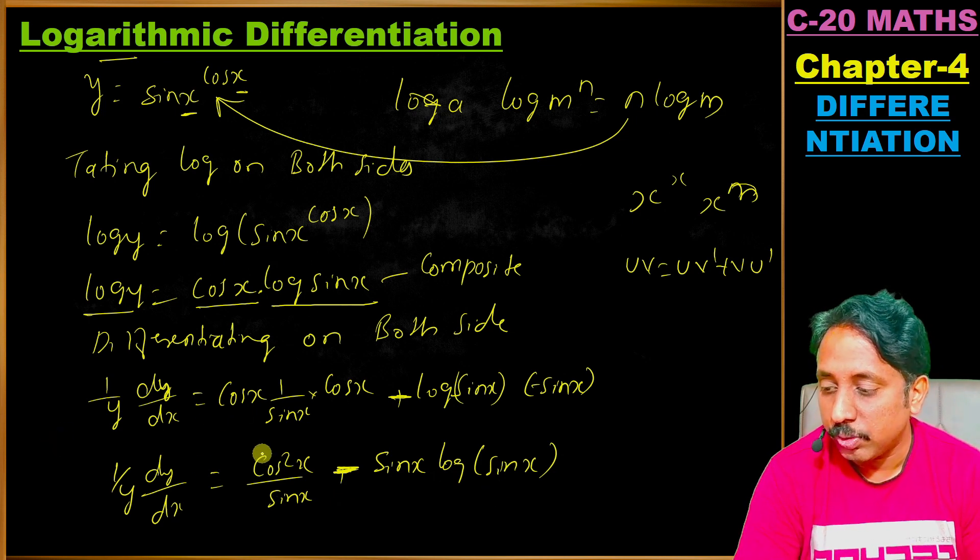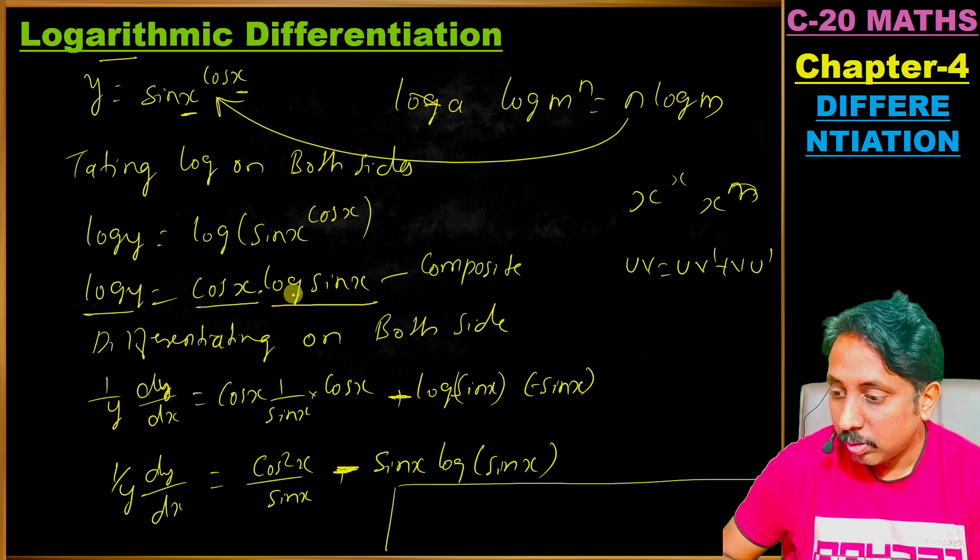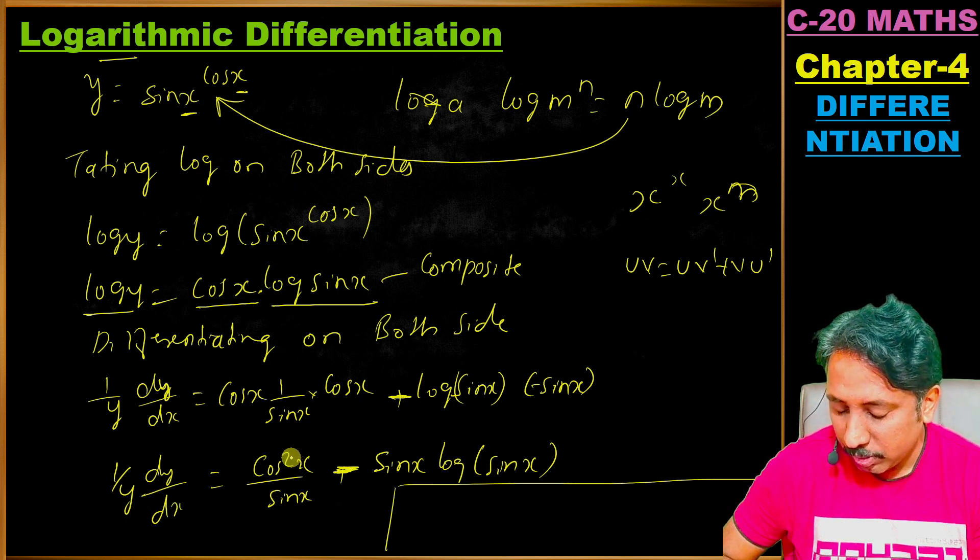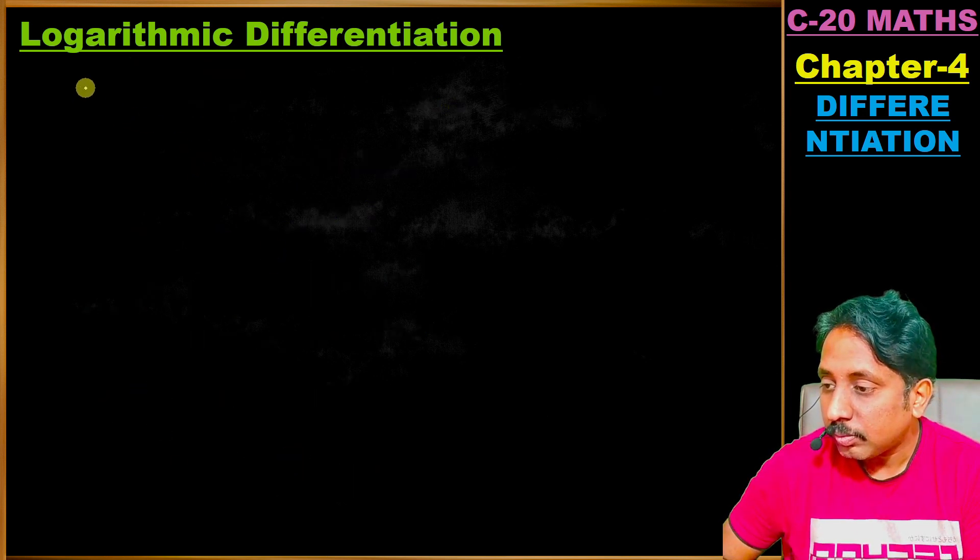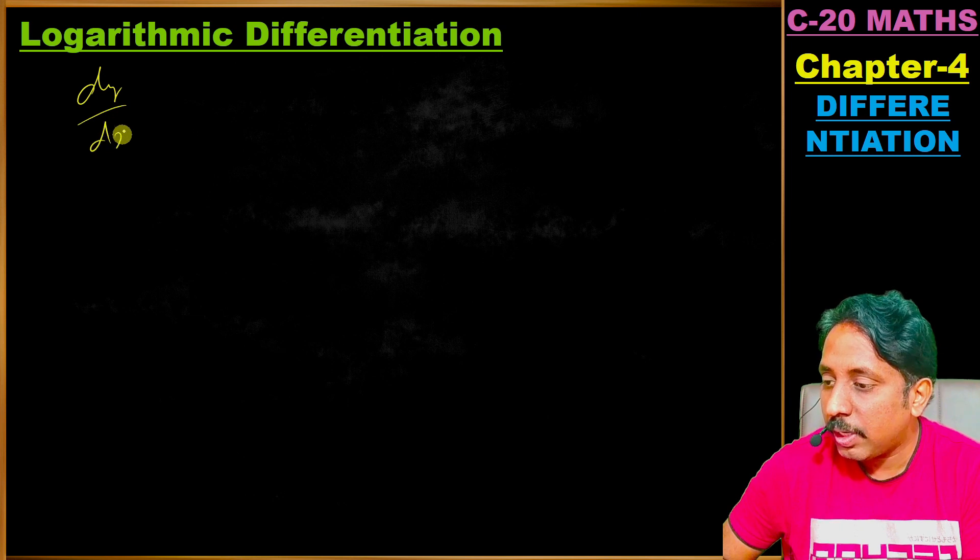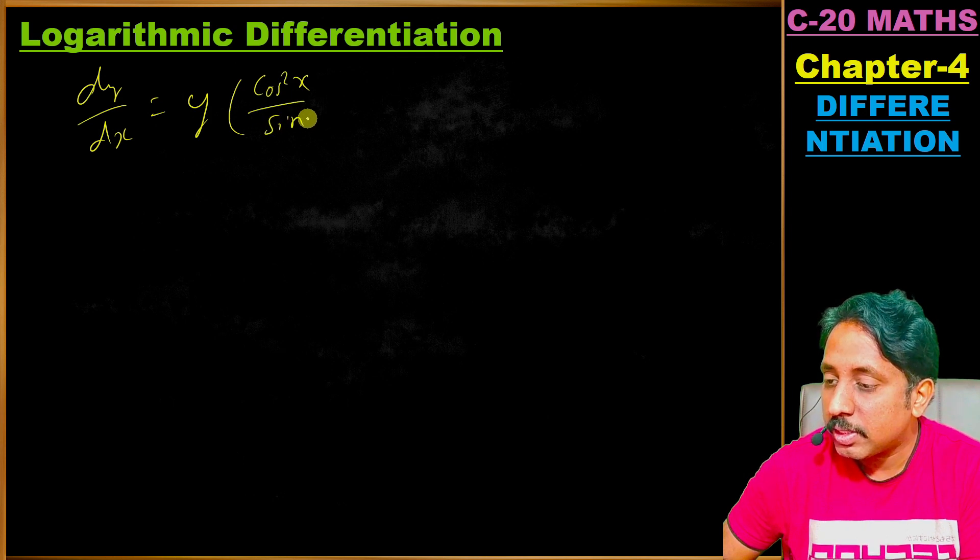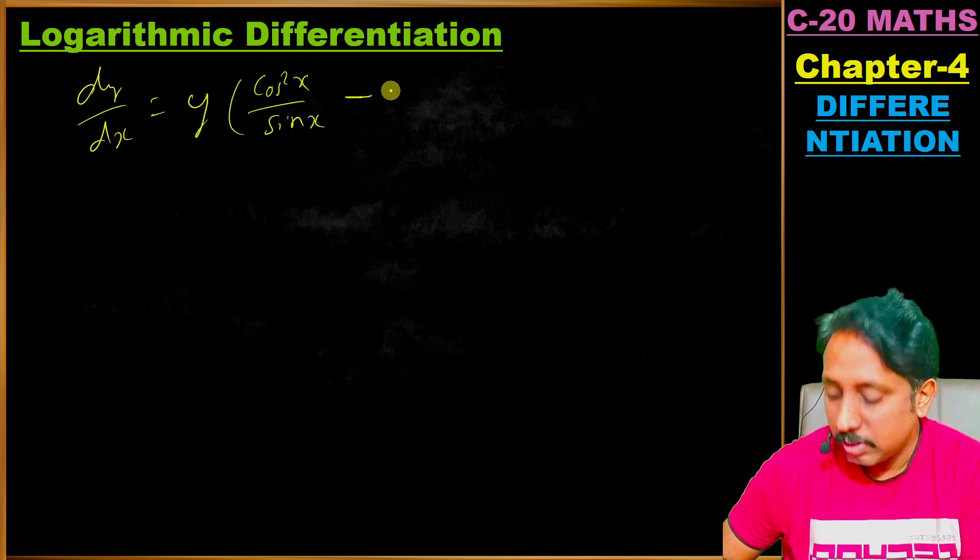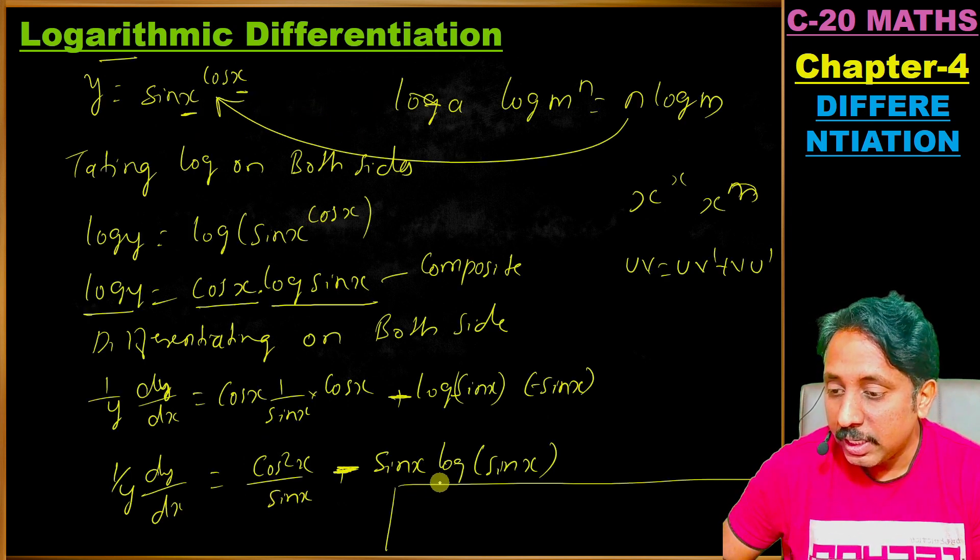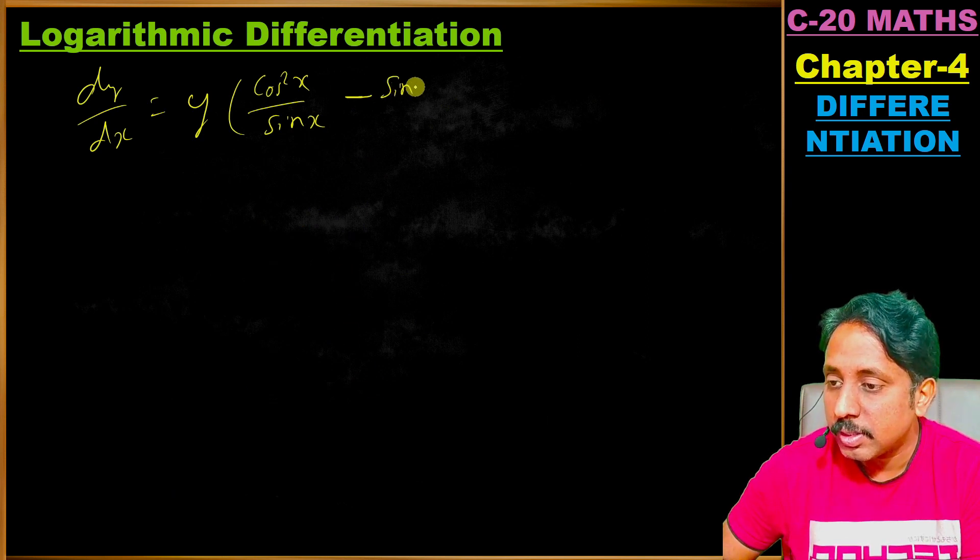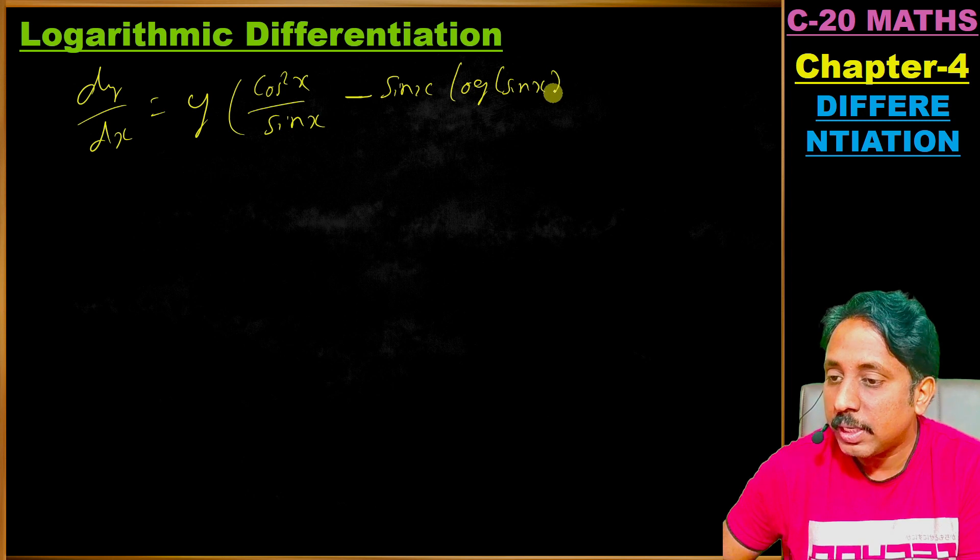Now multiply both sides by y. From equation 1, y equals sin x to the power of cos x. Therefore dy by dx equals sin x to the power of cos x times (cos squared x divided by sin x minus sin x log sin x).